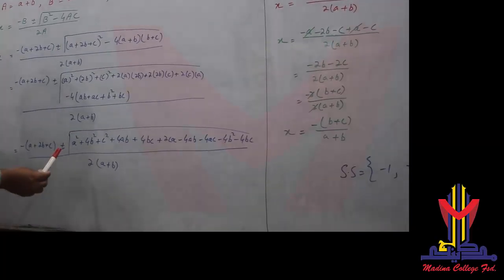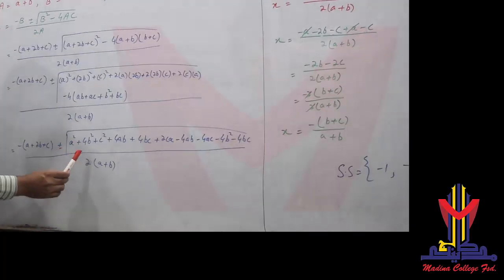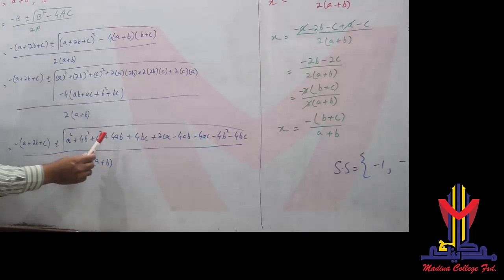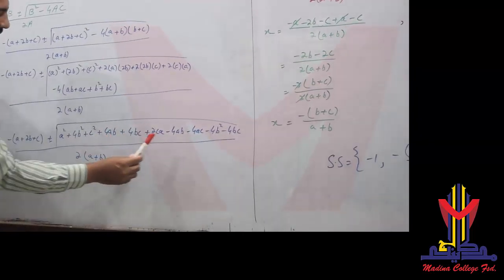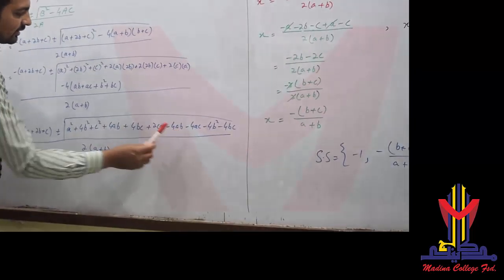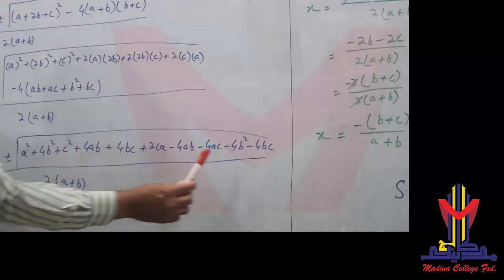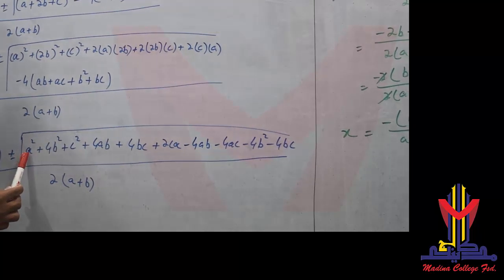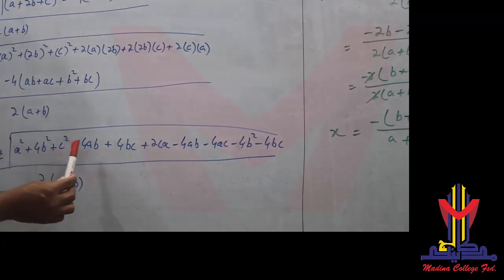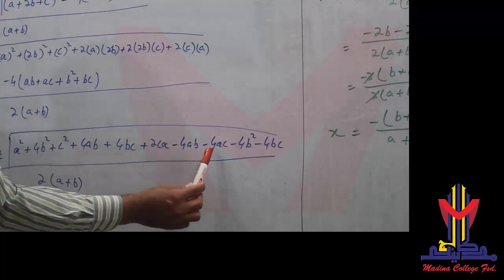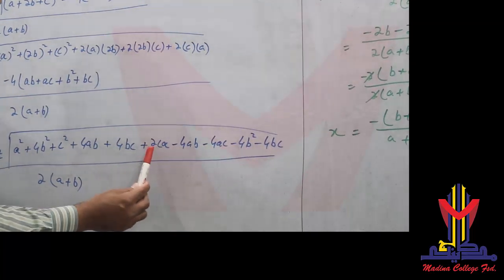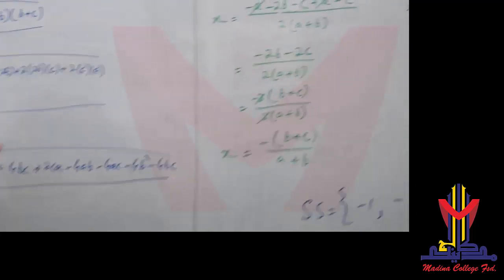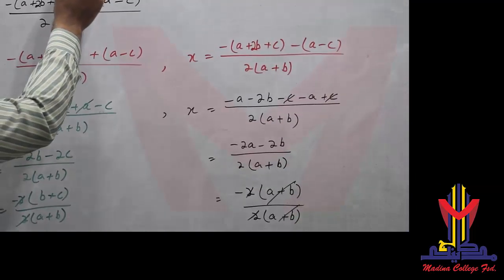In this step we cancel terms: +4B² and -4B² cancel, +4AB and -4AB cancel, +4BC and -4BC cancel. The remaining values are A² + C², and from the remaining terms: -4AC + 2CA = -2CA. So we are left with A² + C² - 2AC under the square root.